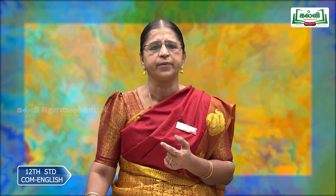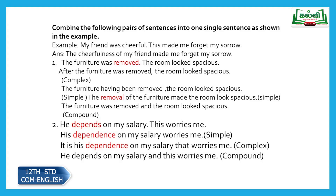'He depends on my salary. This worries me.' In your text 'depends' is underlined. As a simple sentence — you need to remove one verb and have only one finite verb. 'Depends' and 'worries' are two finite verbs; eradicate one by converting it to a noun: his dependence on my salary worries me — both sentences combined into a simple sentence.